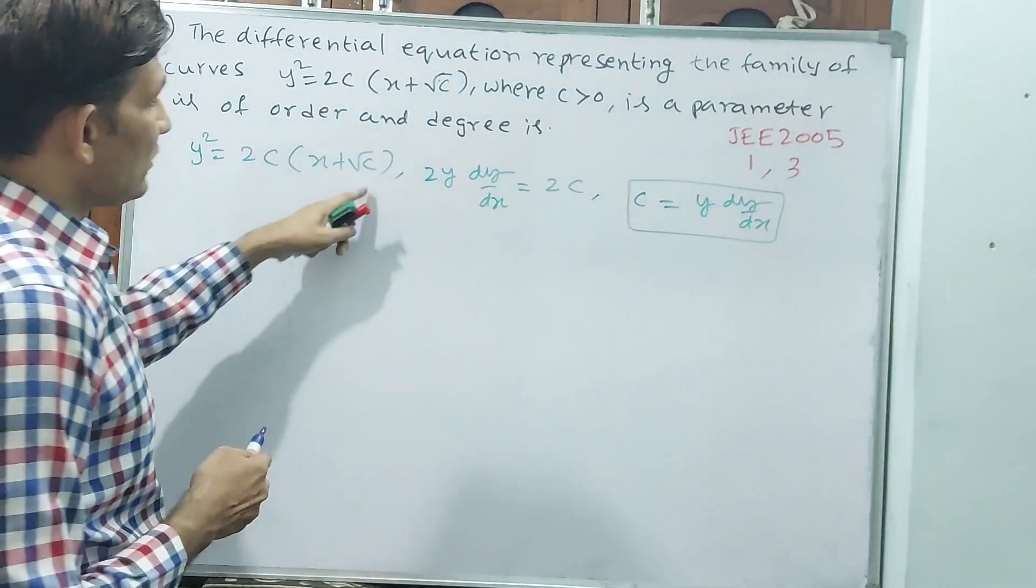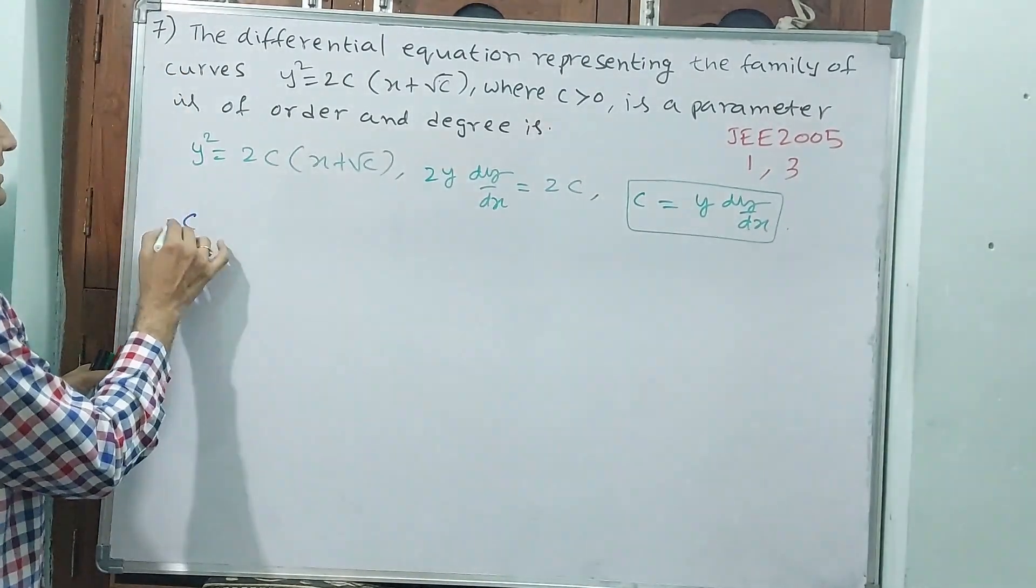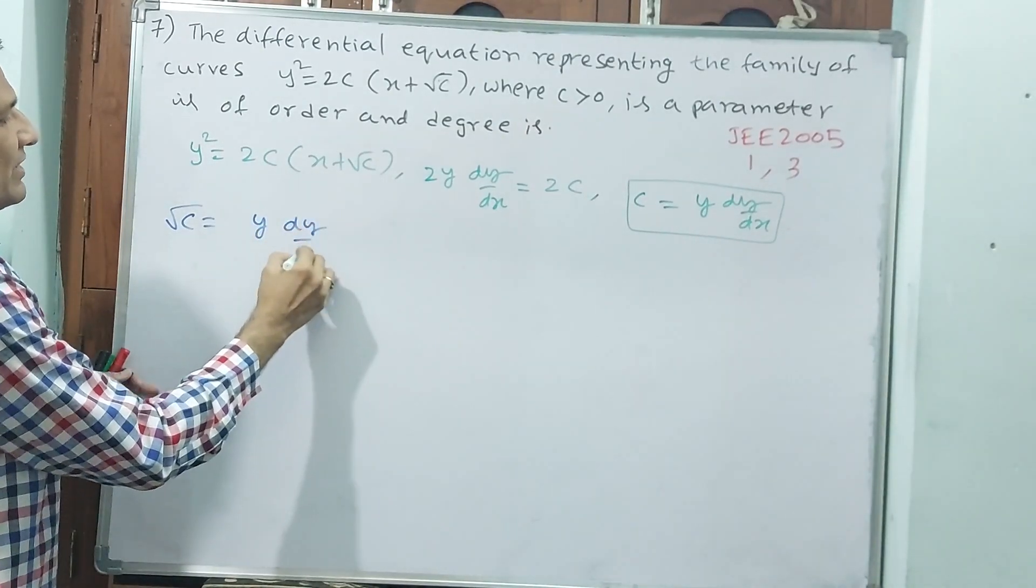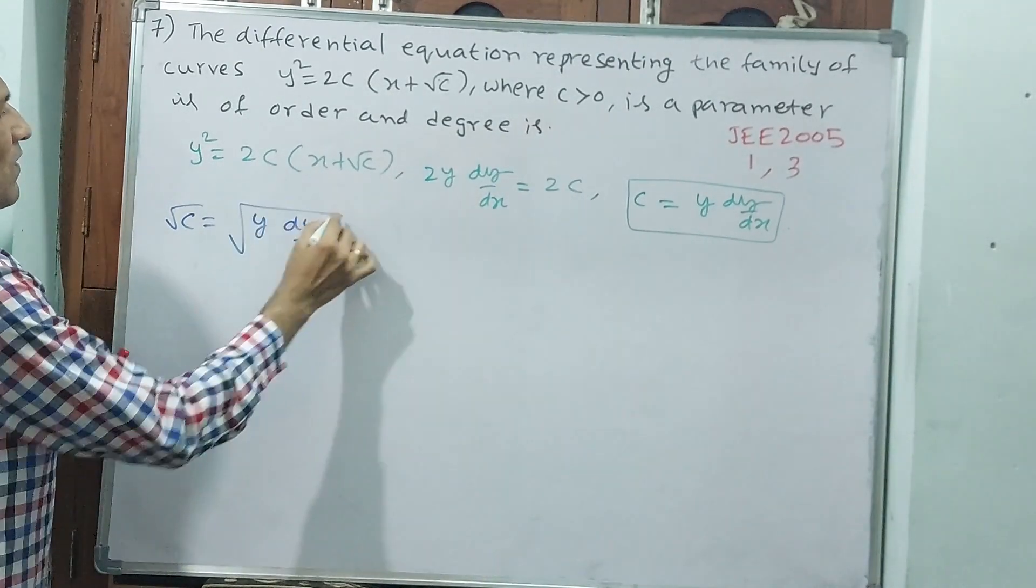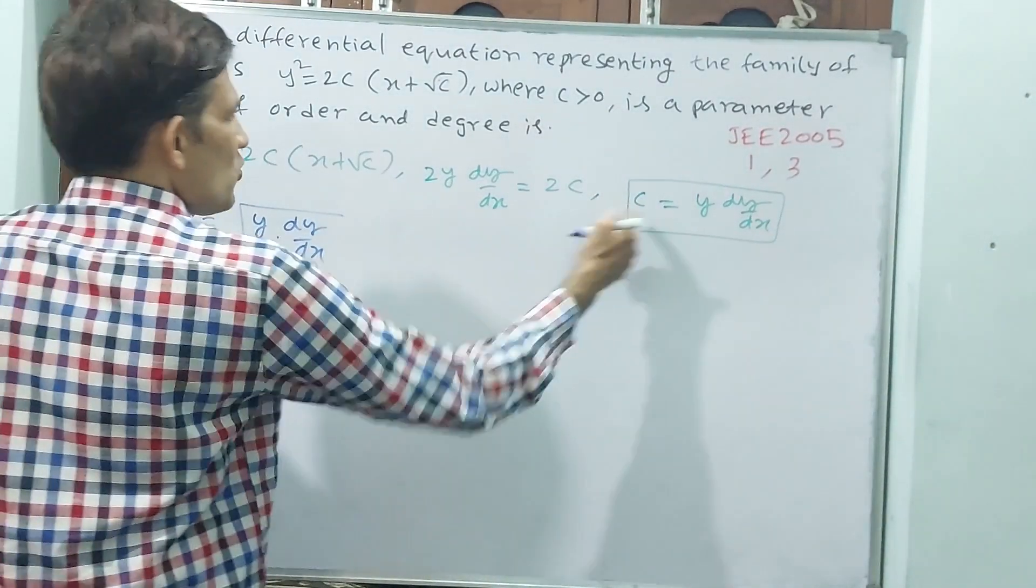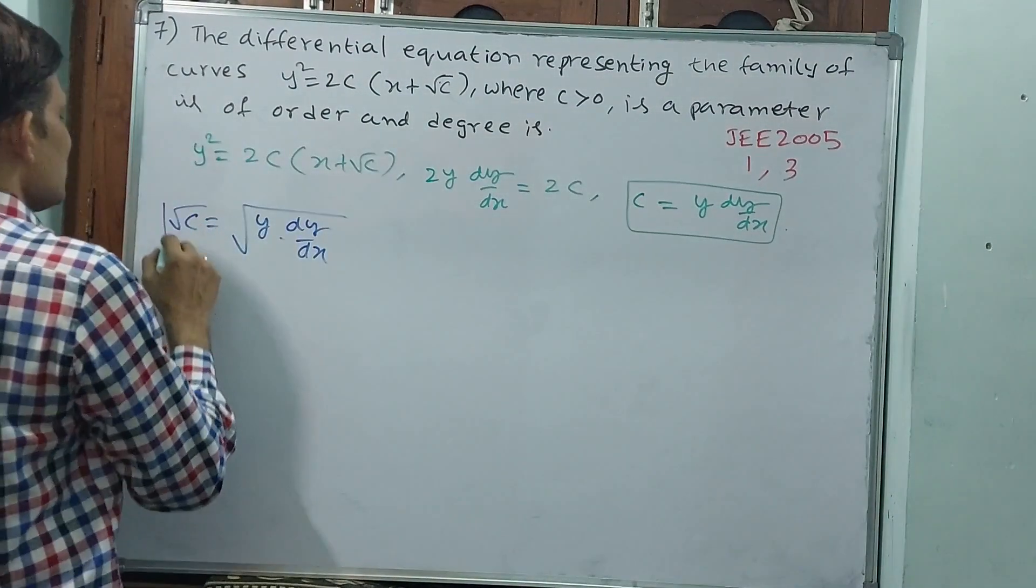Now, here √c also you want. What about √c then? √c = √(y·dy/dx). Now these two values you substitute in the first equation.